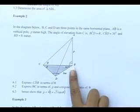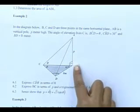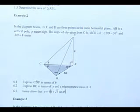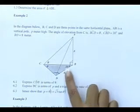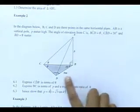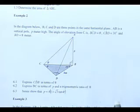And then it says AB is a vertical pole. Vertical means it must be 90. That is P meters high. Everybody now knows what angle of elevation is. Angle of elevation is theta. And this angle here is 30 degrees. And BD is 8 meters.